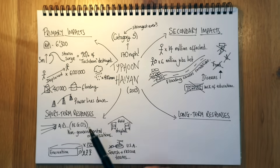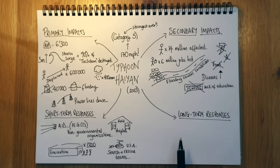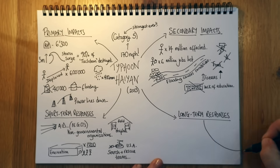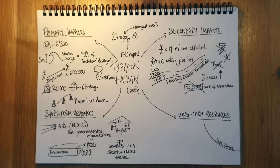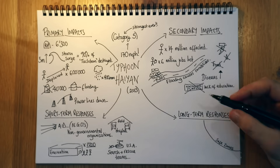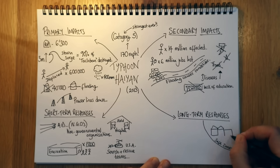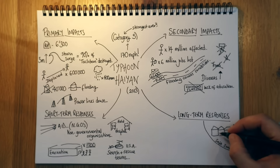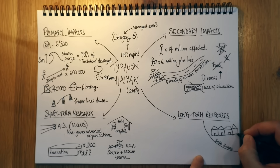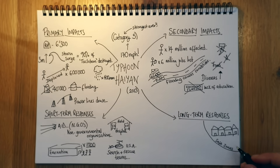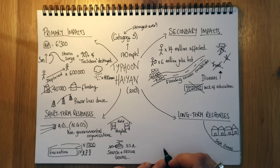In the longer term, much more work needed to be done. The first thing was creating safe zones — areas away from the coast. That's quite difficult in the Philippines because it's an archipelago of islands, but they made safe zones where they built accommodation for people who had lost their homes. These homes were on high land, away from the risk of flooding, and built with relatively good modern materials.